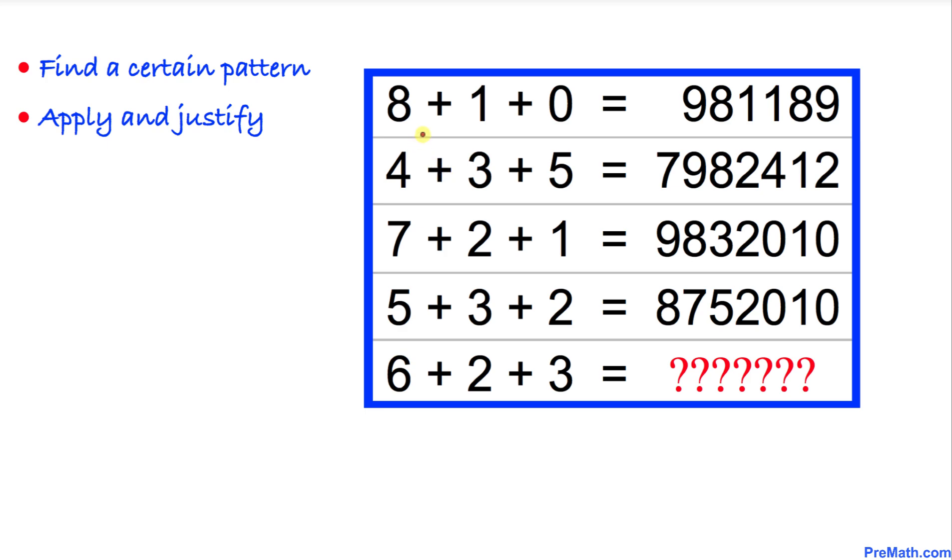If we look very closely, we can see eight plus one is nine, and eight plus zero is eight, and likewise one plus zero is one.